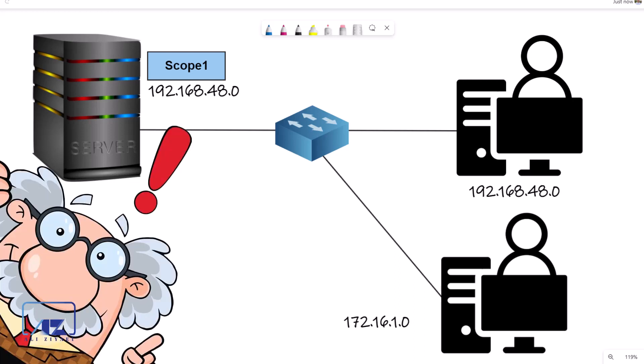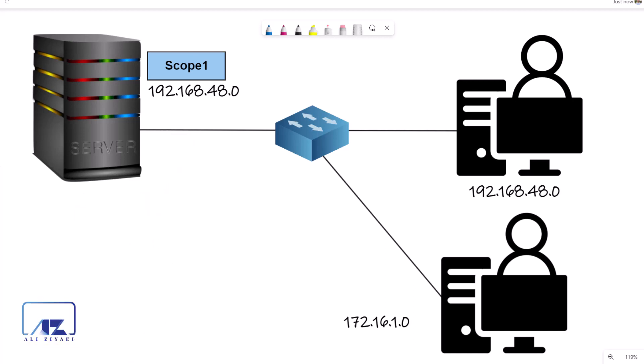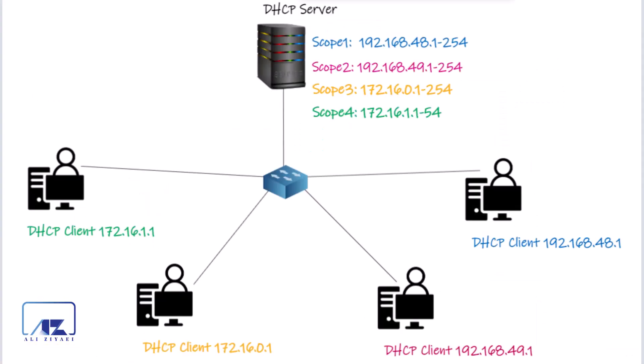The correct answer is to create a super scope. Super scope allows you to support multiple networks — you can create multiple scopes with different IP ranges and add them to a super scope. This allows your DHCP server to select IP addresses from all those different scopes and lease them to clients on the same network interface.